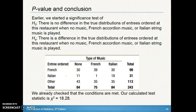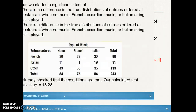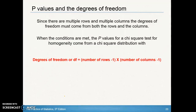Let's take a look at what that conclusion means. We stated in our test of significance that there was no difference in the true distribution of entrees ordered when playing no music, French accordion music, or Italian string music. Our alternative said there is in fact a difference when playing different types of music. We already checked all the conditions are met and our calculated statistic is 18.28. Now how are we going to find the p-value? The p-value is the probability that occurs given that there's no difference in the distributions.